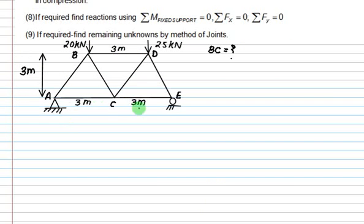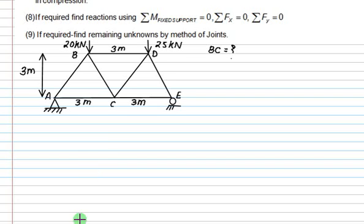We have a truss where all members are 3m by 3m and the height is also 3m. Two point loads are acting, one at B and one at D. We want to find out the force in member BC. One method is the method of joints and the second method is the method of sections. If you want to go for the method of joints, you need to find the reactions first. The member we are interested in is BC, so highlight that member.